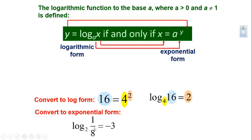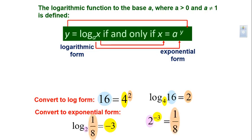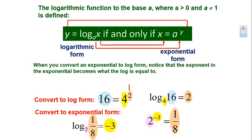Another example: log base 2 of 1/8 = −3. This means that if you raise 2 to the power of −3, you get 1/8. The base is the same, and the output of one is the input of the other, and the input of one is the output of the other.